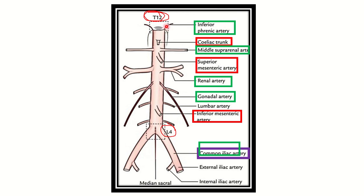The lateral branches are marked in the green box. First is the inferior phrenic artery, given when the abdominal aorta just enters the abdomen. Then the middle suprarenal artery, followed by the renal artery, and finally the gonadal artery. These four pairs form the lateral branches.